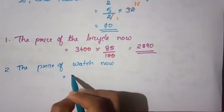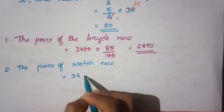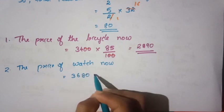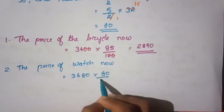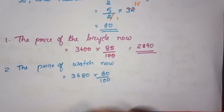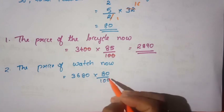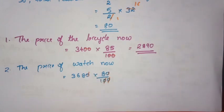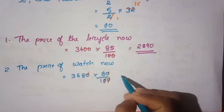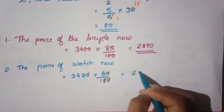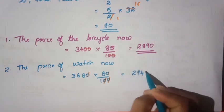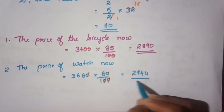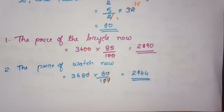We use 3,680 rupees as the original price and calculate 20% less. The new price of the watch is 2,944 rupees.